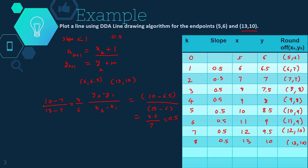We are going to plot all these points: (5,6), (6,7), (7,7), (8,8), (9,8), (10,9), (11,9), (12,10), and (13,10). Let's go to the next slide to plot them.